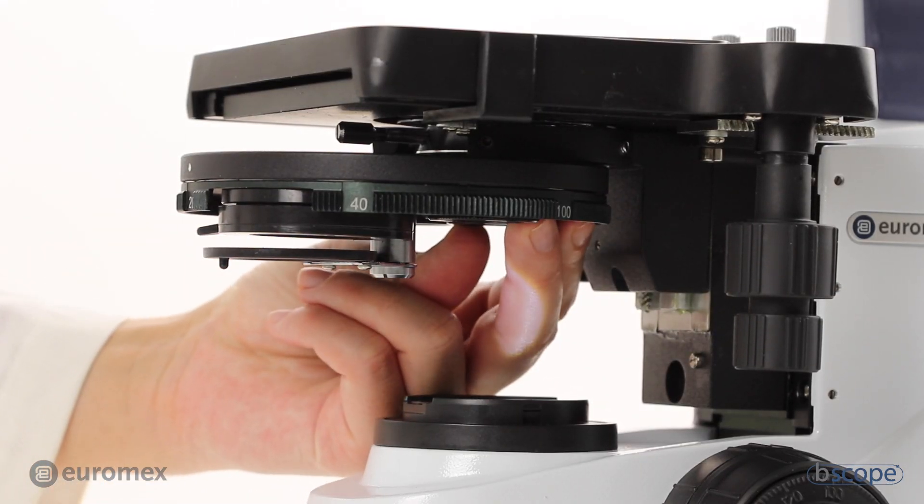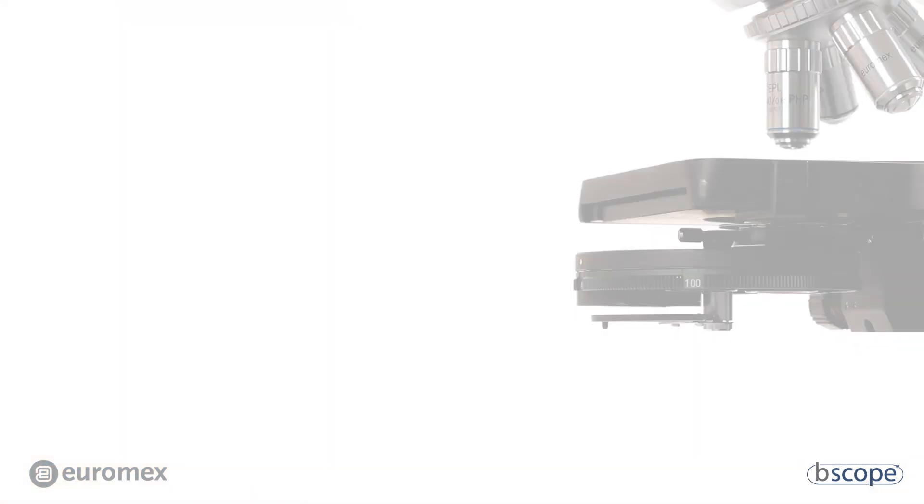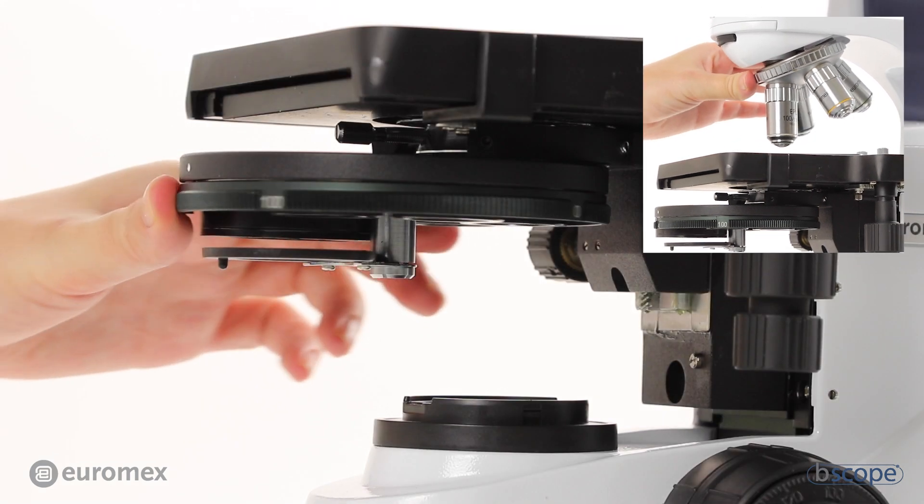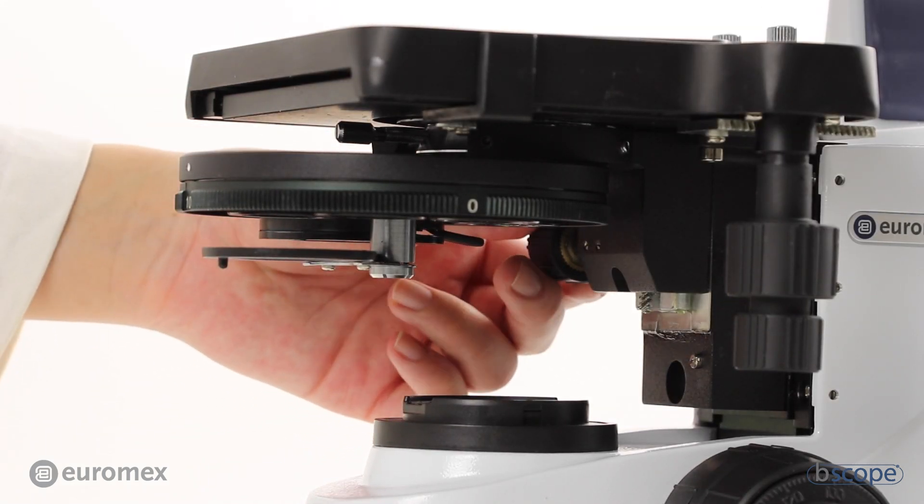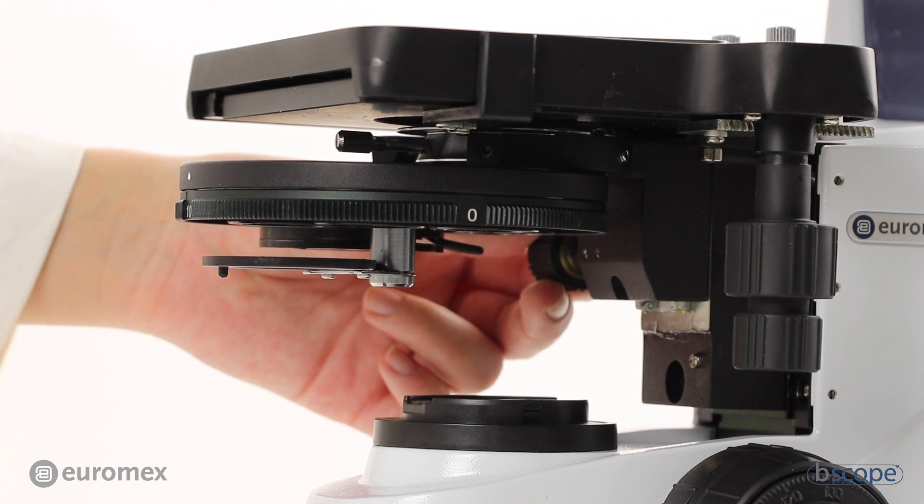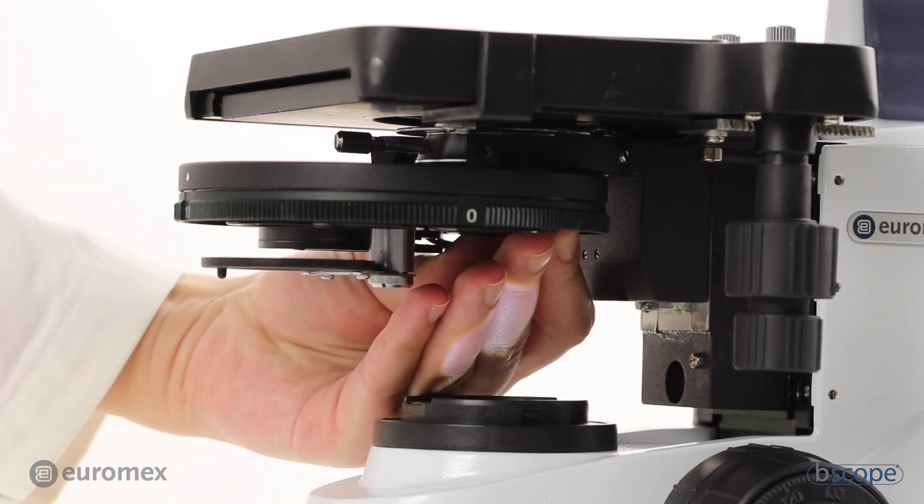Repeat process for the 40 times and 100 times objectives. To focus on the 100 times annulus, you might need to slightly lower the condenser. Center the annulus for the 100 times objective.